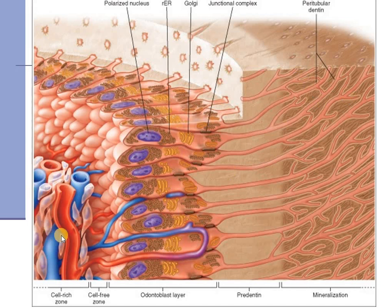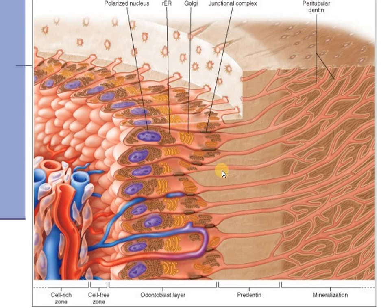Within the pulp, the blood vessels, undifferentiated mesenchymal cells, fibroblasts, etc. support the odontoblastic zone. Just below the odontoblastic zone, there is a cell-free zone which allows the odontoblasts to move backward when dentine is being deposited.